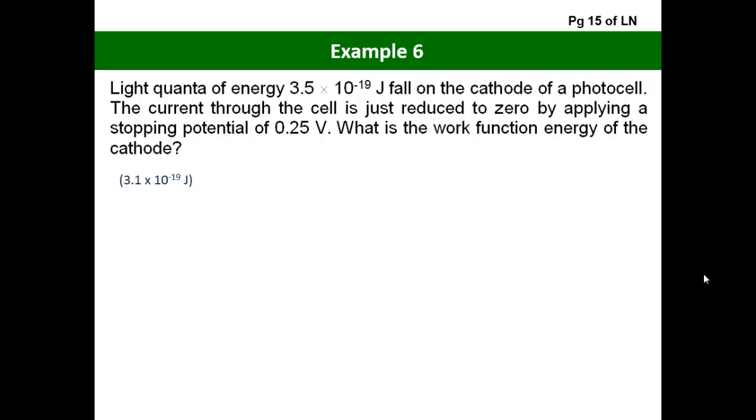Let us now look at example 6 of our lecture notes. Let's read through the question together and identify the key points. In this question, you have light quanta of energy 3.5 × 10^-19 joules that falls on the cathode of a photocell.